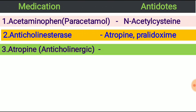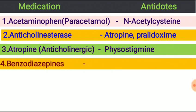Next, atropine or anticholinergic drugs. Anticholinergics block the action of the neurotransmitter acetylcholine, and are mainly used in COPD, bladder conditions, gastrointestinal disorders, and symptoms of Parkinson's disease. The antidote of atropine or anticholinergics is physostigmine.